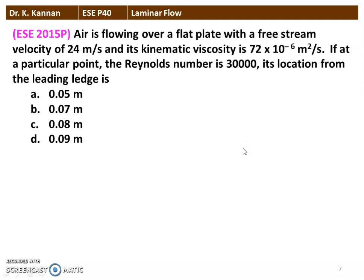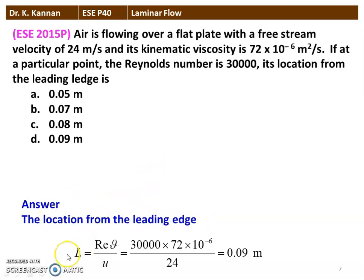The next question from the 2015 question paper: air is flowing over a flat plate with a free stream velocity of 24 meters per second and kinematic viscosity of 72 × 10⁻⁶ m²/s. At a particular point the Reynolds number is 30,000 — find its location from the leading edge. Using L = (Re × ν) / U = (30,000 × 72 × 10⁻⁶) / 24, calculating gives L = 0.09 meter. The answer is option D, 0.09 meter.